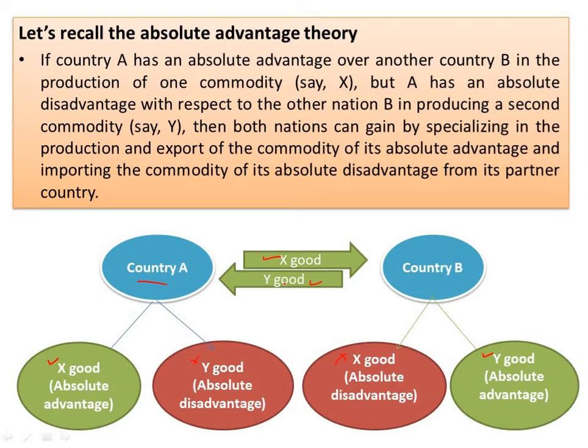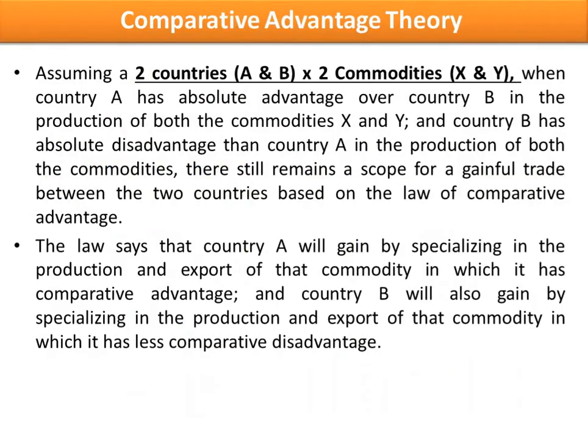Let us come to the comparative advantage theory. Here we assume a two-country, two-commodity model. The two countries are A and B, and the two commodities are x and y. We further assume that A has absolute advantage over country B in the production of both commodities x and y, while country B has absolute disadvantage compared to country A in the production of both commodities. Under this situation, according to David Ricardo, there is a scope for gainful international trade between A and B.